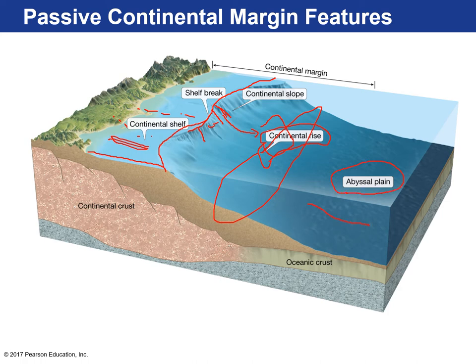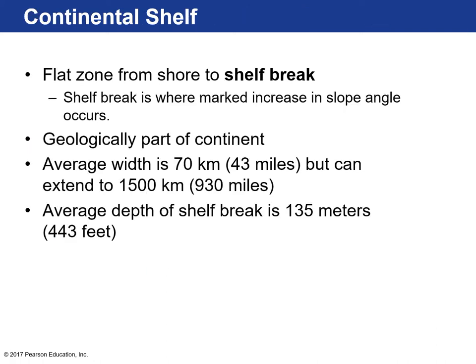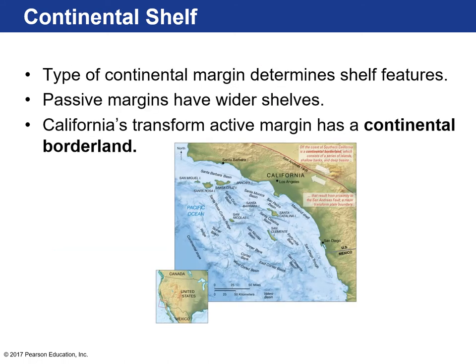Beyond the continental rise, you go to the deep ocean — the abyssal plain. The continental shelf is that flat area landward of the shelf break; it's part of the continent. Its average width is 43 miles but can be as large as 930 miles, and the average depth is about 135 meters, or 443 feet.